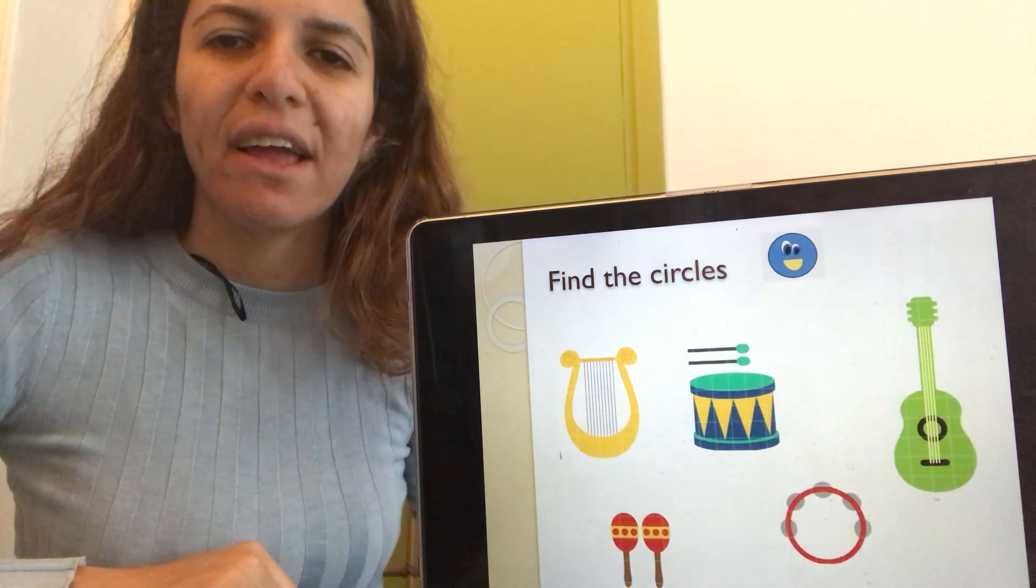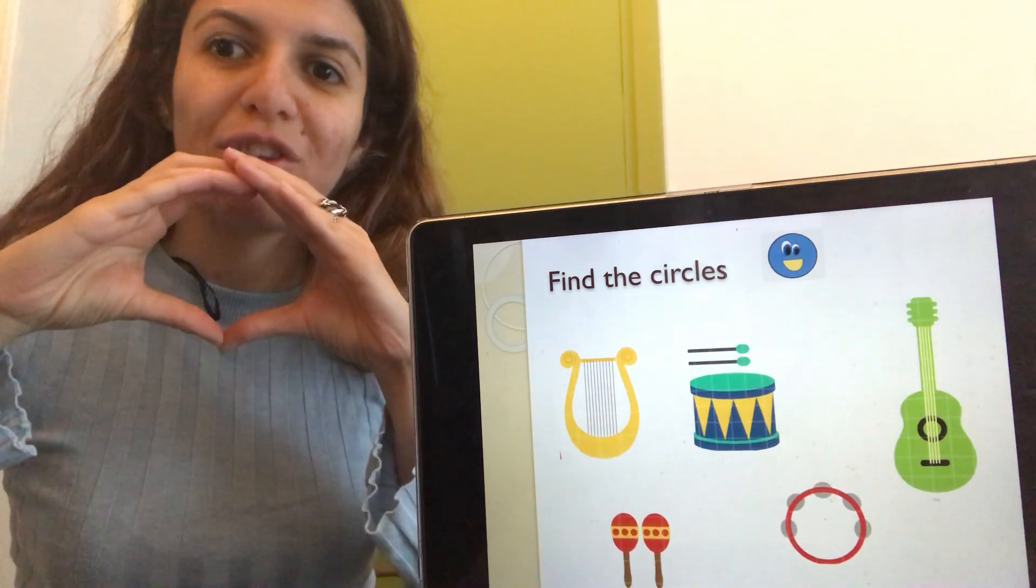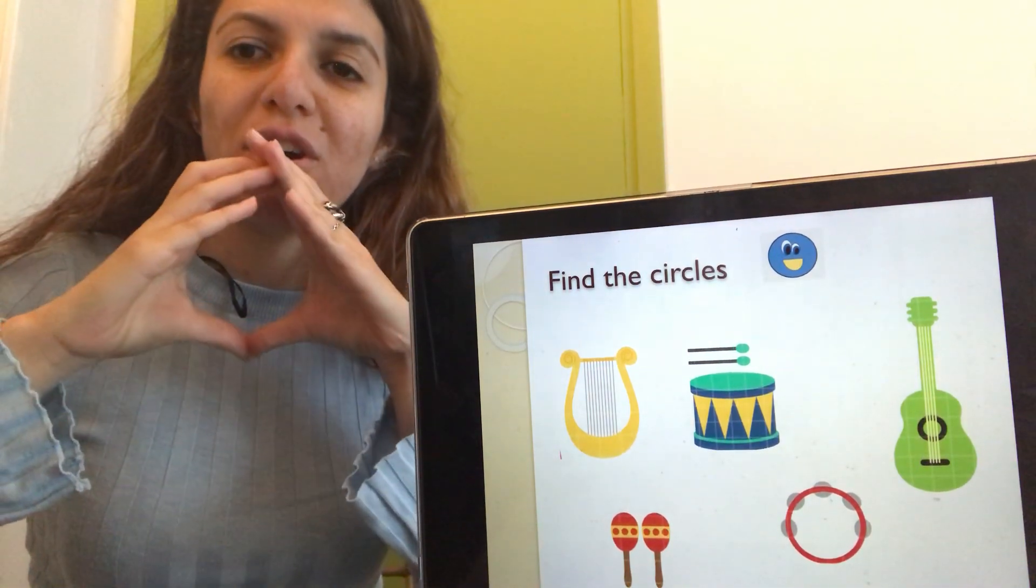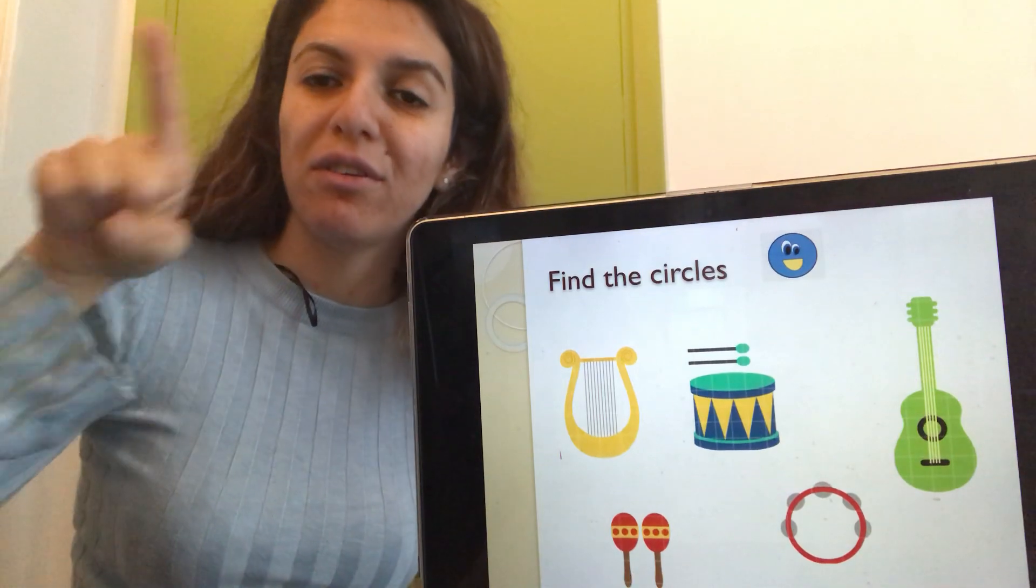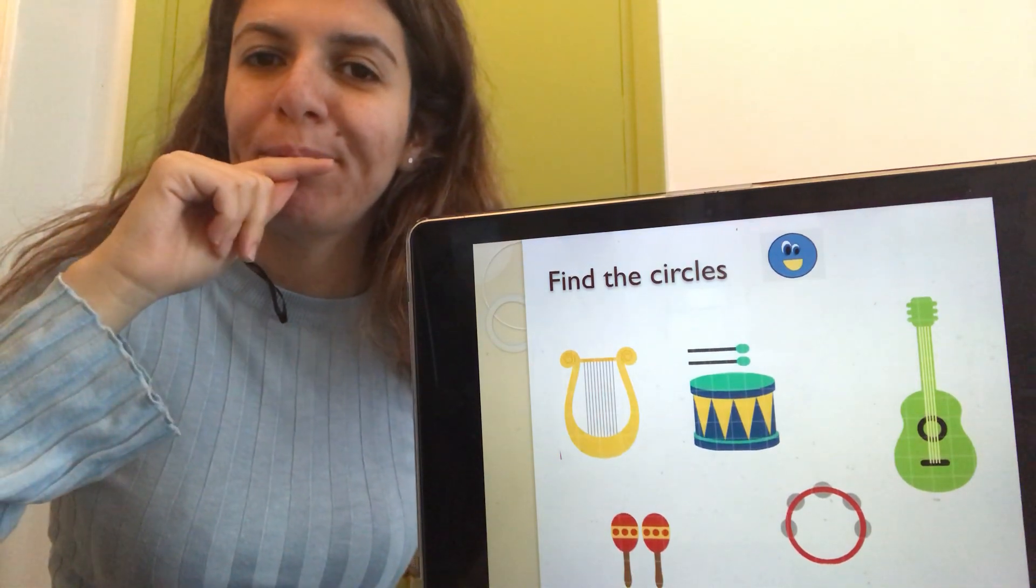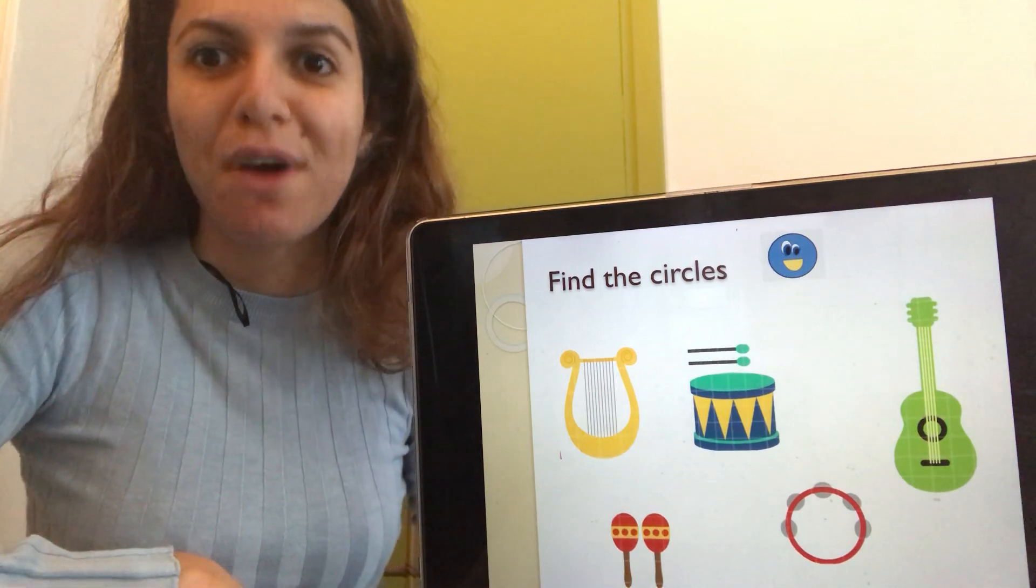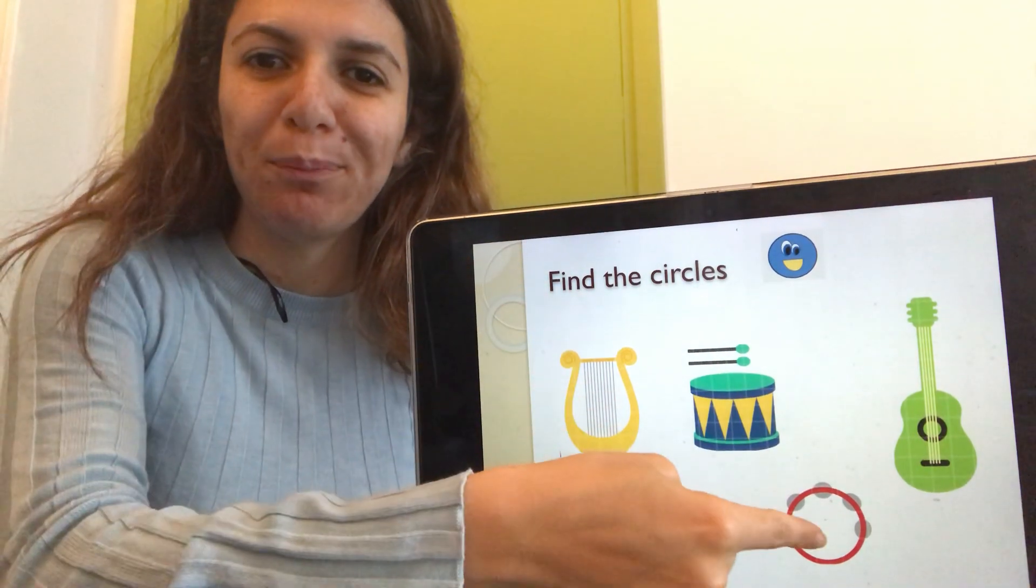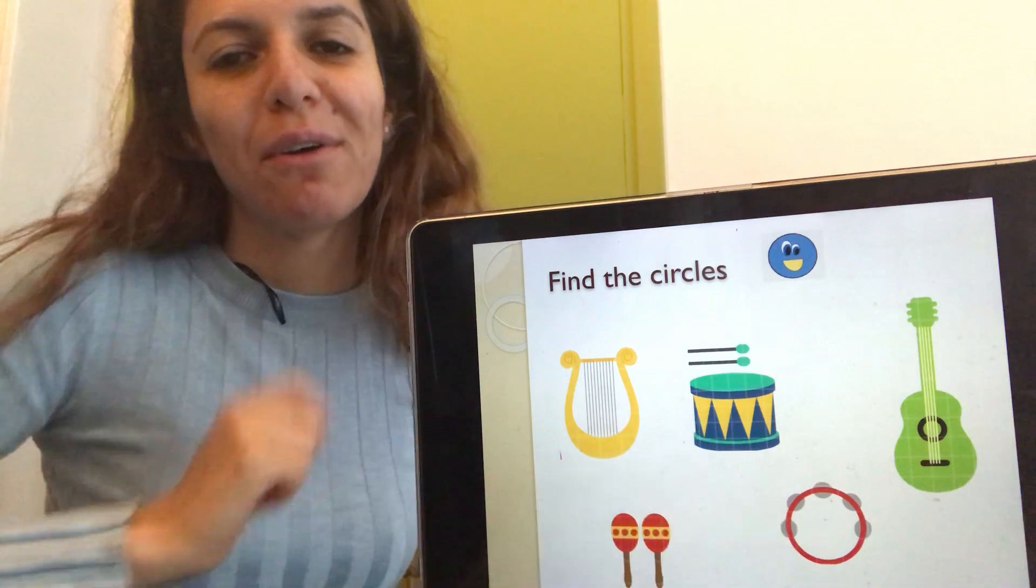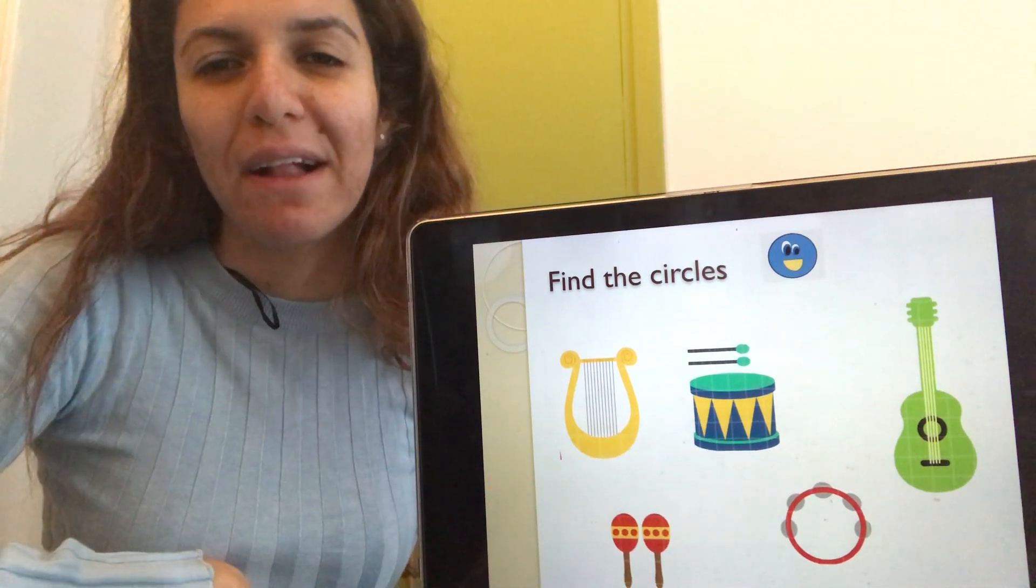Let's find the circle shapes. Where are the circles? Round and round the circle. I see a red circle. Where is the red circle? There we go. The red circle. Well done.